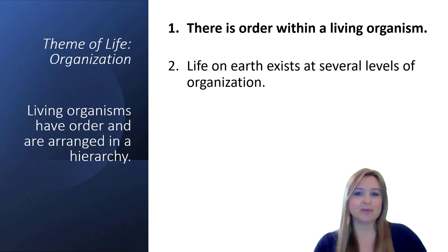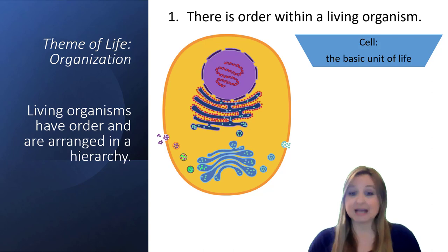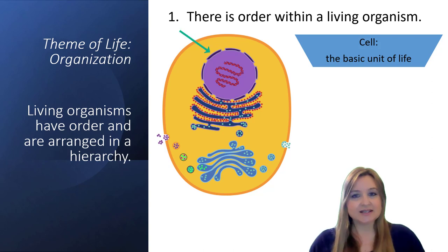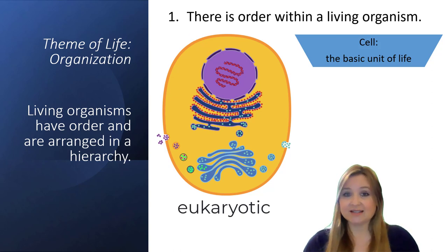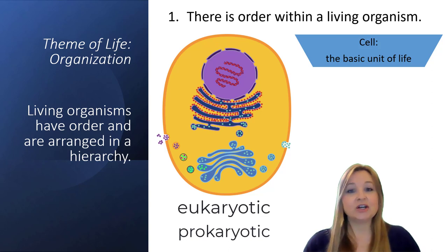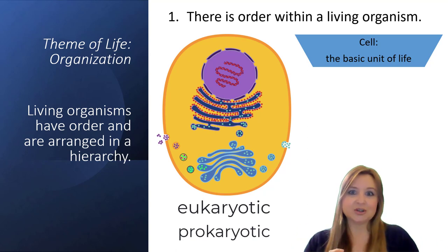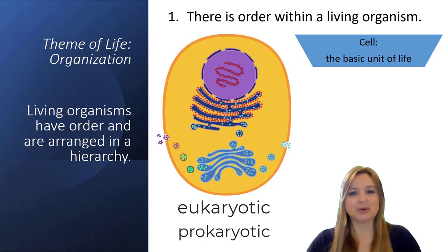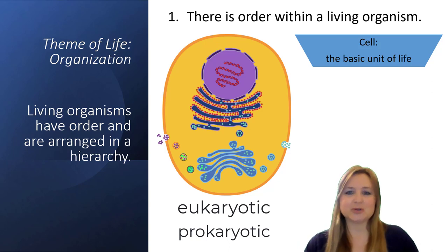There's order within a living organism. This is a eukaryotic cell because it has a nucleus. Cells that have a nucleus are called eukaryotic cells, and cells without a nucleus to organize the DNA in the center are called prokaryotic cells. There's order in eukaryotic and prokaryotic cells. We focus on eukaryotic cells because humans are eukaryotic — all of our cells have nuclei where the DNA is found inside.